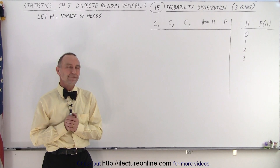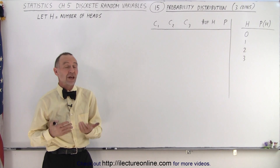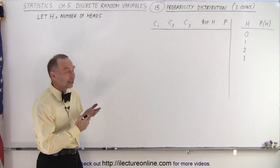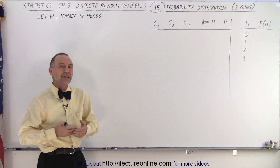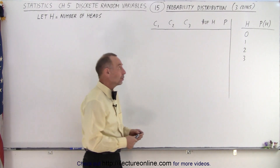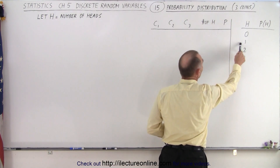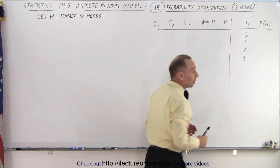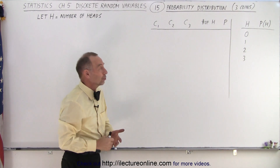Welcome to iLectureOnline. Here we're going to show you an example when we toss three coins and we're trying to find the probability of getting a certain number of heads. The possibilities are that you'll have zero heads, one head, two heads, or three heads, because we're flipping three coins.